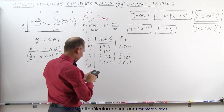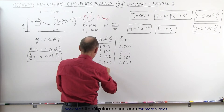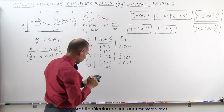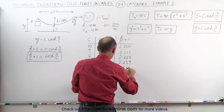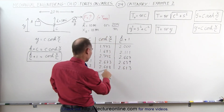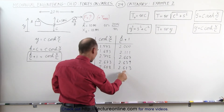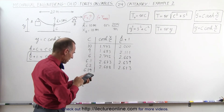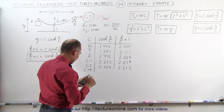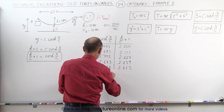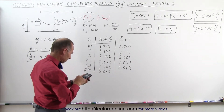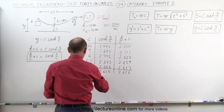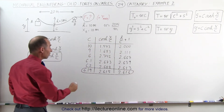With c equals 6.2: cosh(10/6.2) = 2.608, and h/c + 1 = 10/6.2 + 1 = 2.613 — now too small. Let's try c equals 6.19: cosh(10/6.19) = 2.615, and h/c + 1 = 10/6.19 + 1 = 2.616. That's very close — essentially equal — so we accept c equals 6.19 meters.